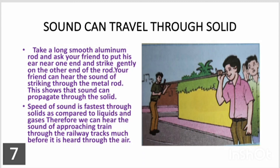Comparing the speed of sound in solids, liquids, and gases — in vacuum the speed is 0 because sound cannot travel there. The speed of sound is fastest through solids compared to liquids and gases, and slowest in gases. Because particles in solids are very closely packed, vibrational energy passes from one particle to another very fast. That is why we can hear an approaching train through the railway tracks much before we hear it through the air.